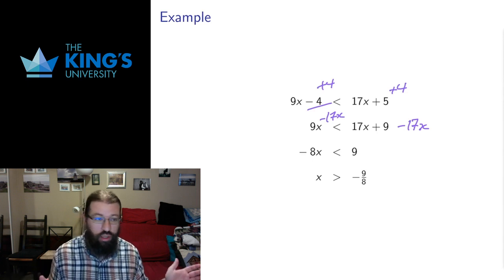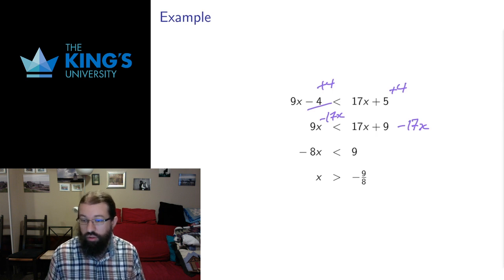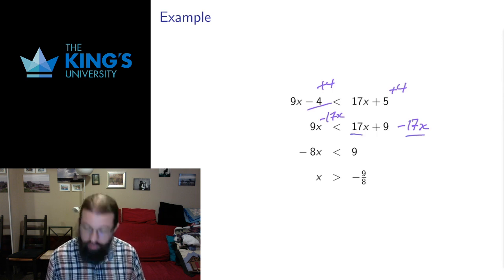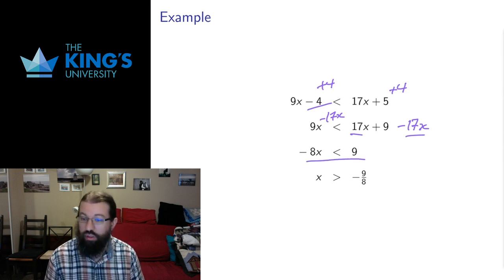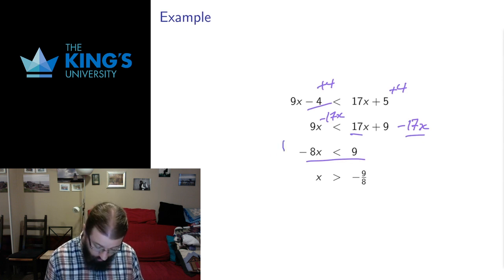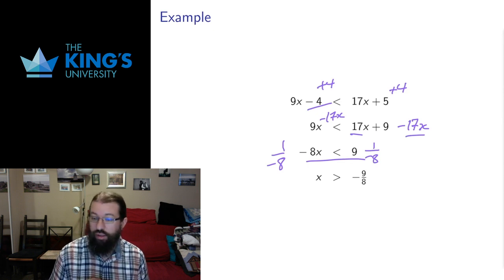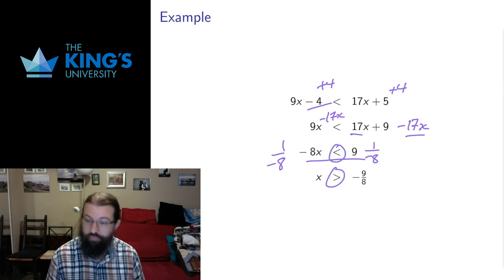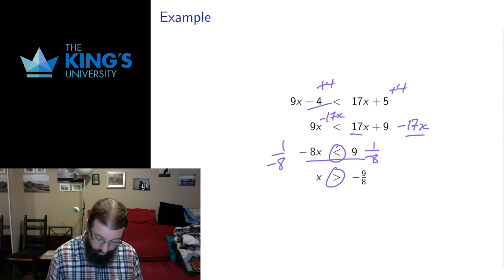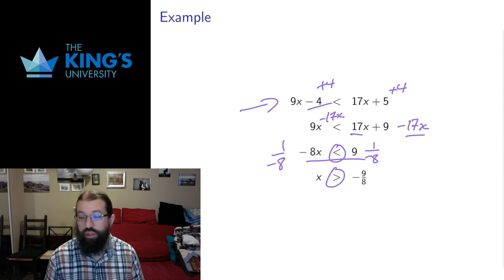I don't know whether x is positive or negative, but it doesn't matter for addition and subtraction — those preserve the inequality. So 17x minus 17x goes away on the right, and 9 minus 17 is negative 8, giving me negative 8x less than 9. Now I divide by negative 8, which cancels on the left. I get negative 9/8 on the right, and since I divided by a negative number, the direction of the inequality switches. The solution is all numbers strictly greater than negative 9/8.